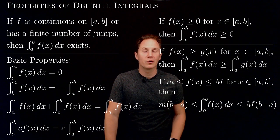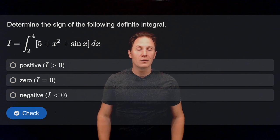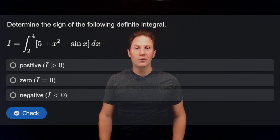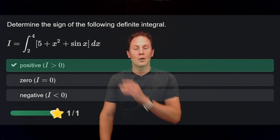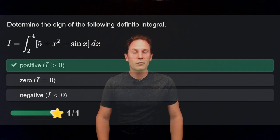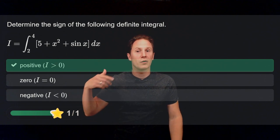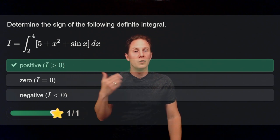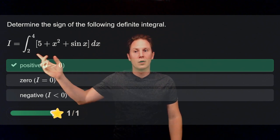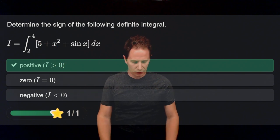Let's solve some problems using these basic properties. Determine the sign of the following definite integral. The answer is positive — the definite integral has a positive value because the function we are integrating is positive over the interval from 2 to 4.